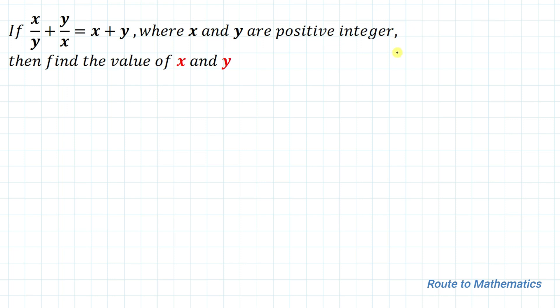Here we have given: if x/y plus y/x equals x plus y, where x and y are positive integers, then find the value of x and y. We have an equation and we are asked to find the values of these variables x and y, and we are also given x and y are positive integers.